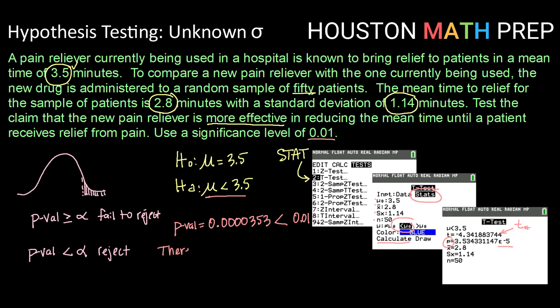So we can say there is enough evidence to reject the null hypothesis that the mean time to relief is 3.5 minutes. Meaning it does look like this new medication is more effective than the old one.